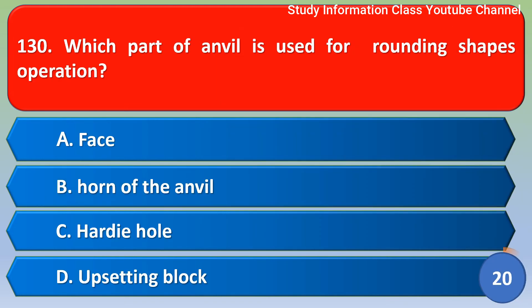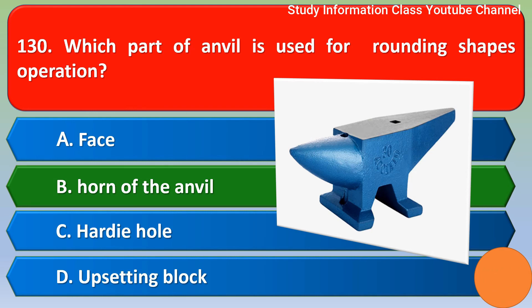Next question: Which part of the anvil is used for rounding shapes operation? Option A: face, Option B: horn of the anvil, Option C: hardy hole, Option D: upsetting block. The correct answer is Option B — horn of the anvil.